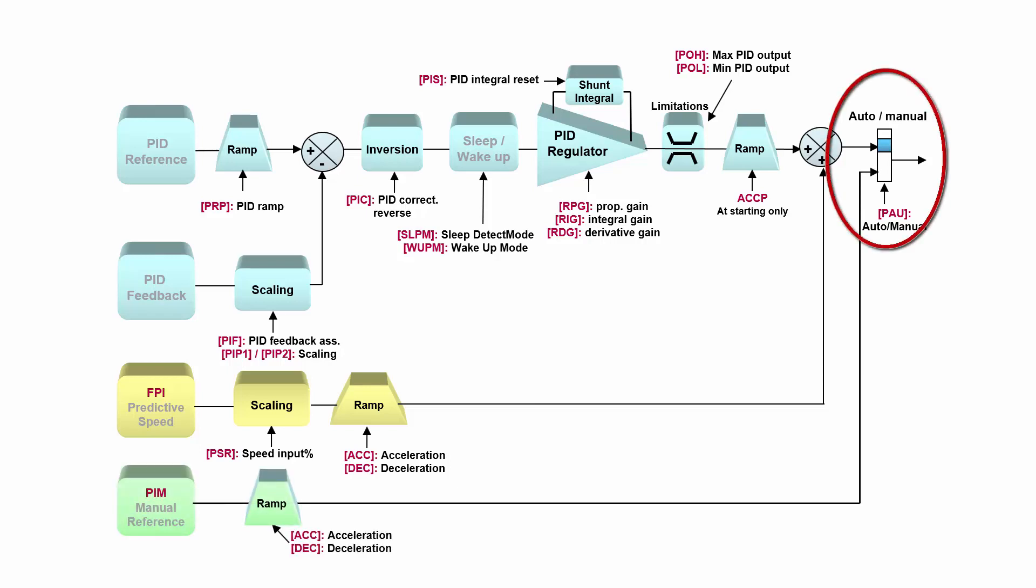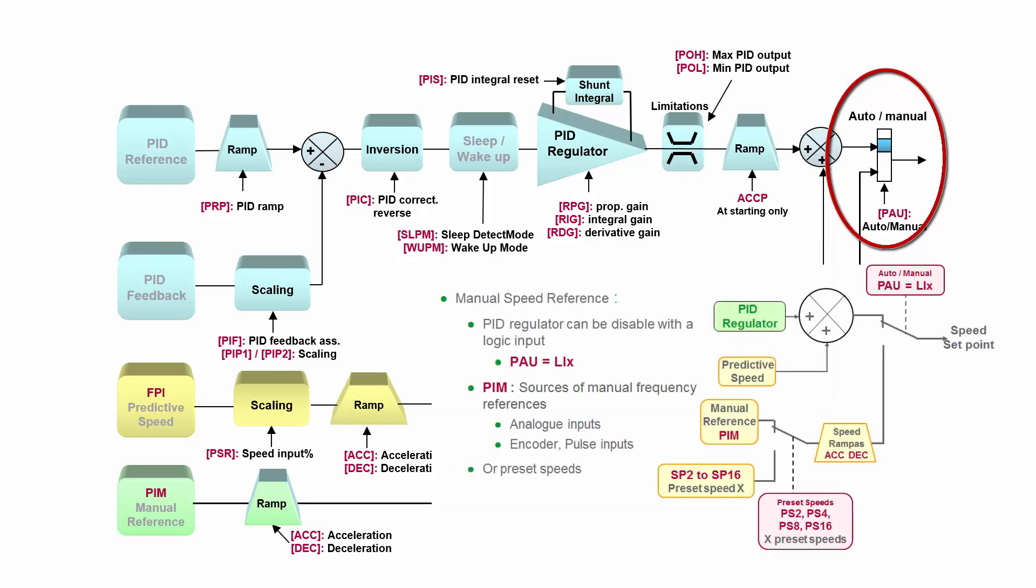So one important thing to say: this is not disabling the PID regulator, but this is only switching the output of PID regulator to speed setpoint. When you are in manual mode, PID regulator is still working. When you switch back to auto, PID regulator takes the control of the drive.